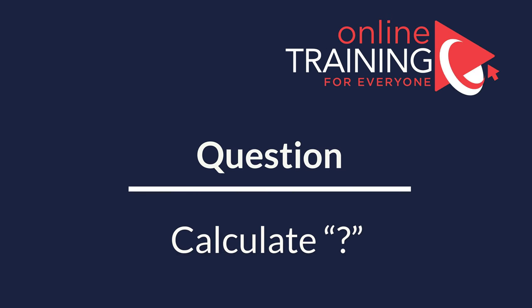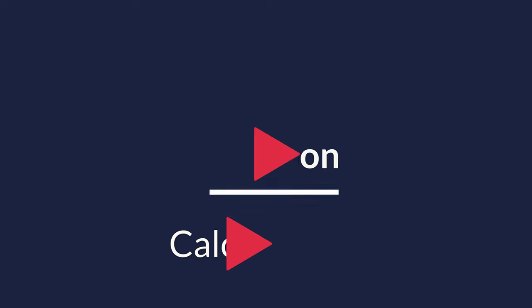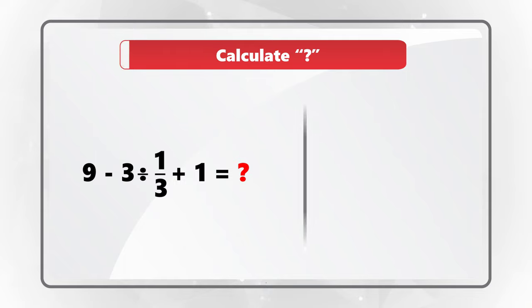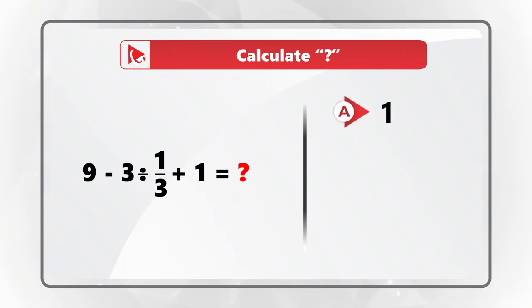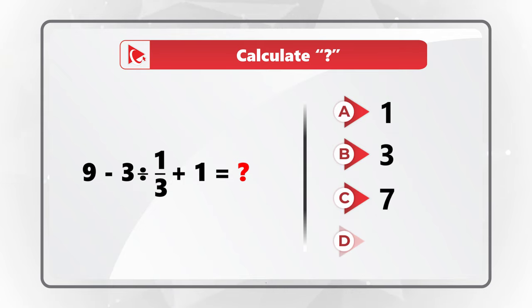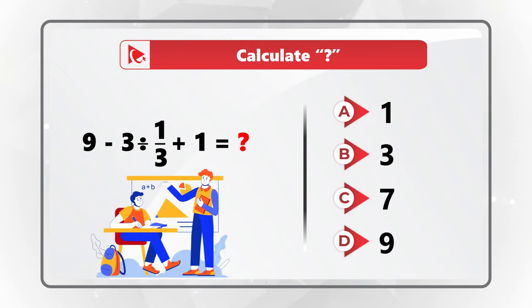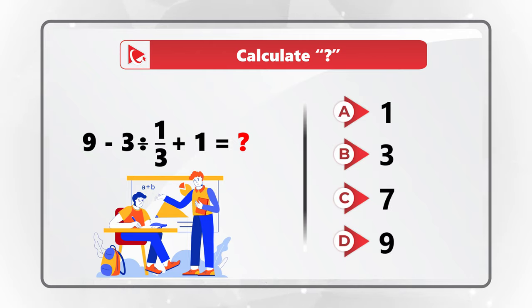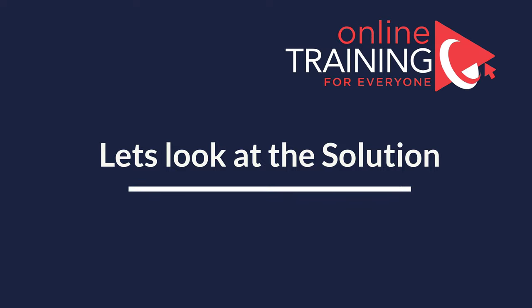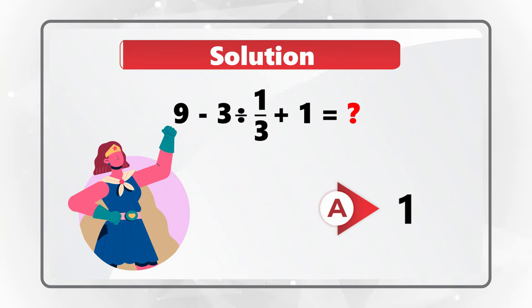Here's an amazing question to test your math skills. You're presented with a simple expression and you need to calculate its value. You have four different choices: A. 1, B. 3, C. 7, and D. 9. Do you see the answer? Give yourself a little bit of time to calculate the solution. The correct answer here is choice A, 1.